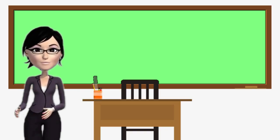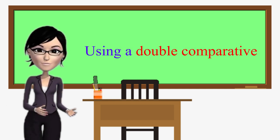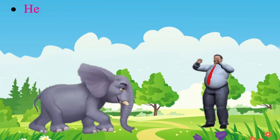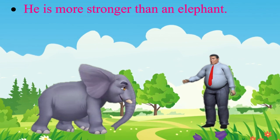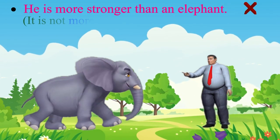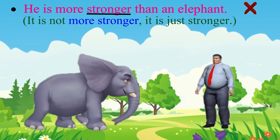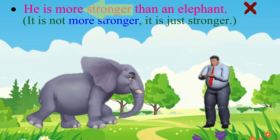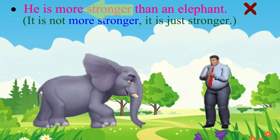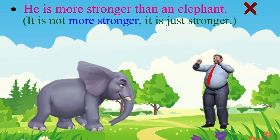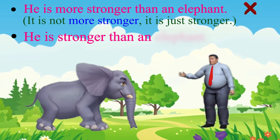Sometimes we use a double comparative. I've heard people say, 'He is more stronger than an elephant.' It is not 'more stronger' — it is just 'stronger.' The word 'stronger' in itself includes the comparison. Please repeat the correct sentence after me: He is stronger than an elephant.